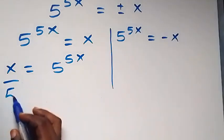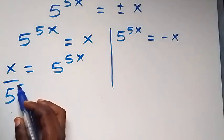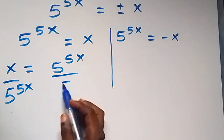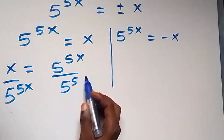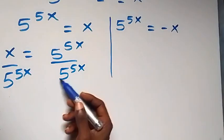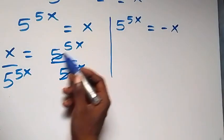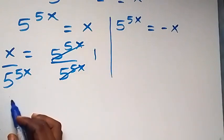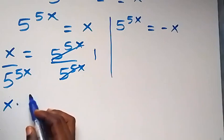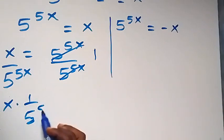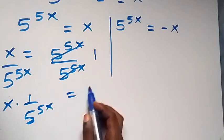Here we have divided by 5 raised to power 5x on both sides. Then what we have here, we are left with 1. We can separate this as x times 1 over 5 raised to power 5x, which equals to 1.